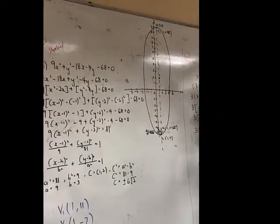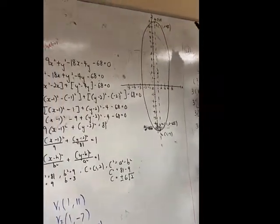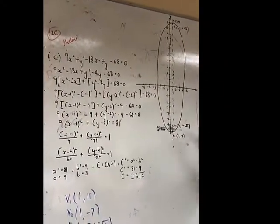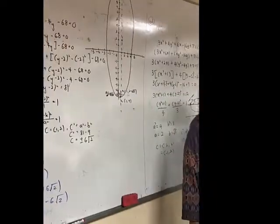So we need to draw point C first, and then foci 1, foci 2, and then vertex 1, vertex 2, and draw the graph. That's all.